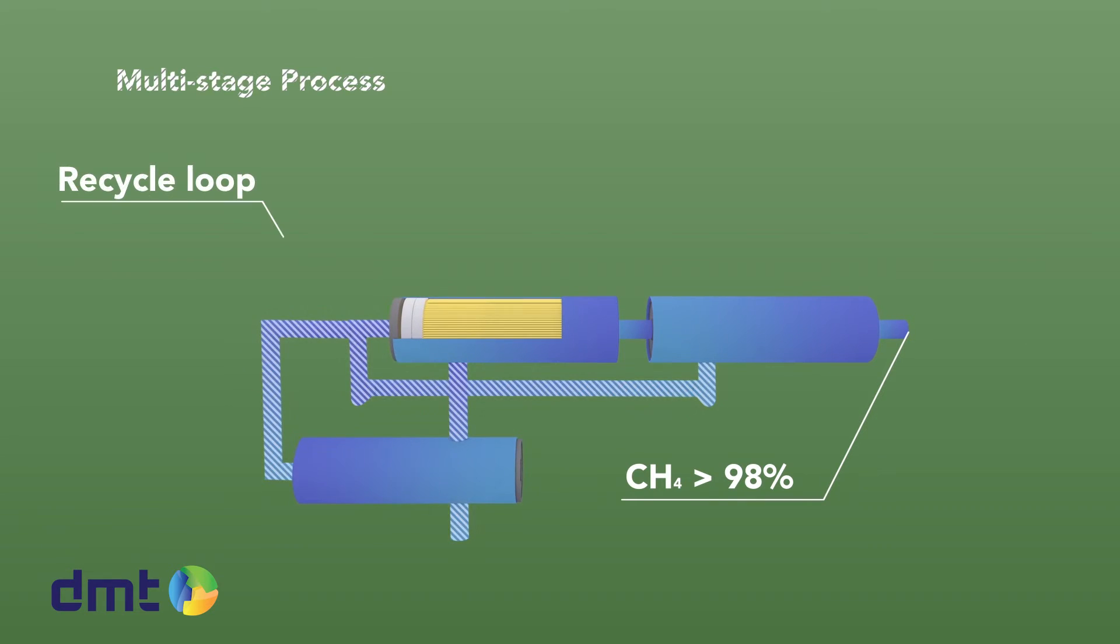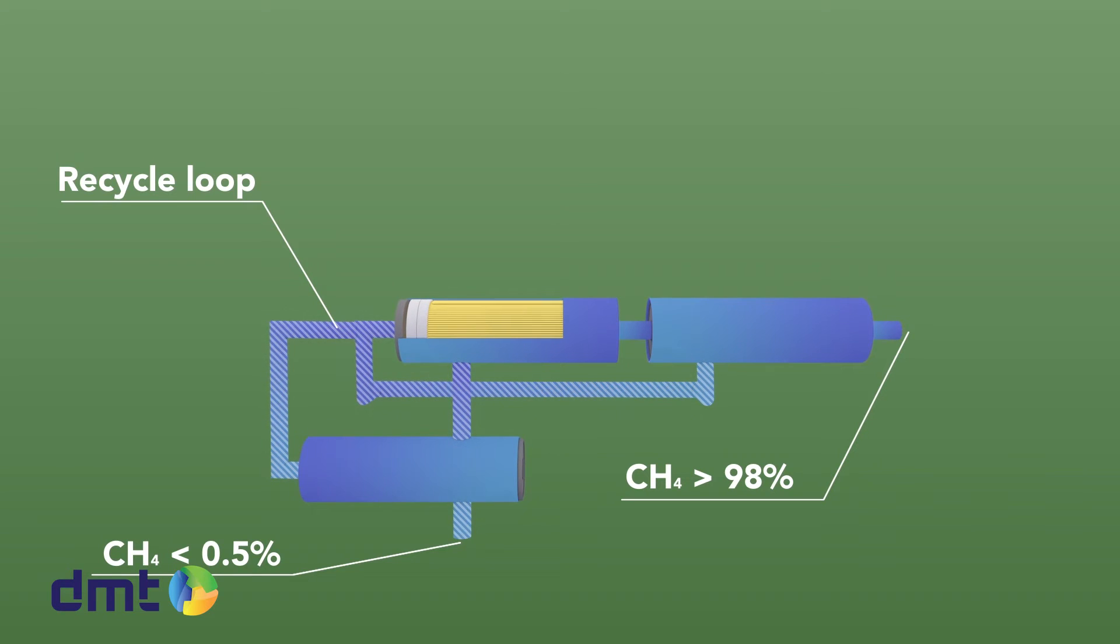On the permeate side, because of intelligent recycle loops, the methane concentration in the carbon dioxide stream can be reduced to less than a half percent.